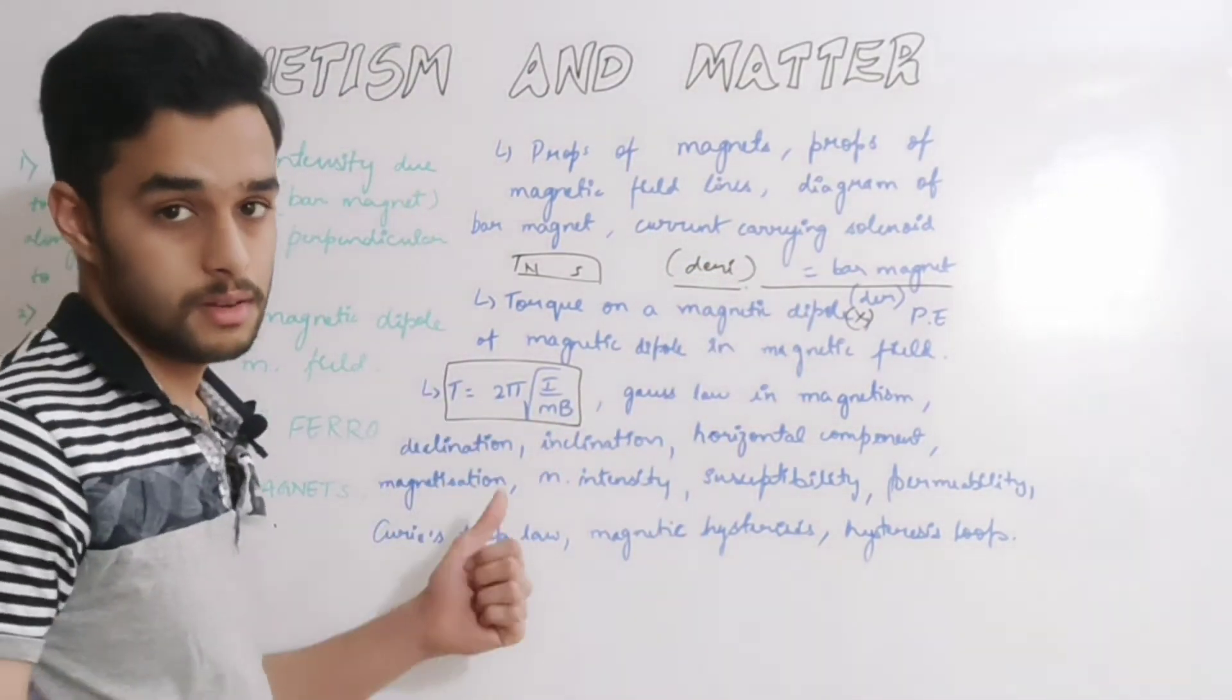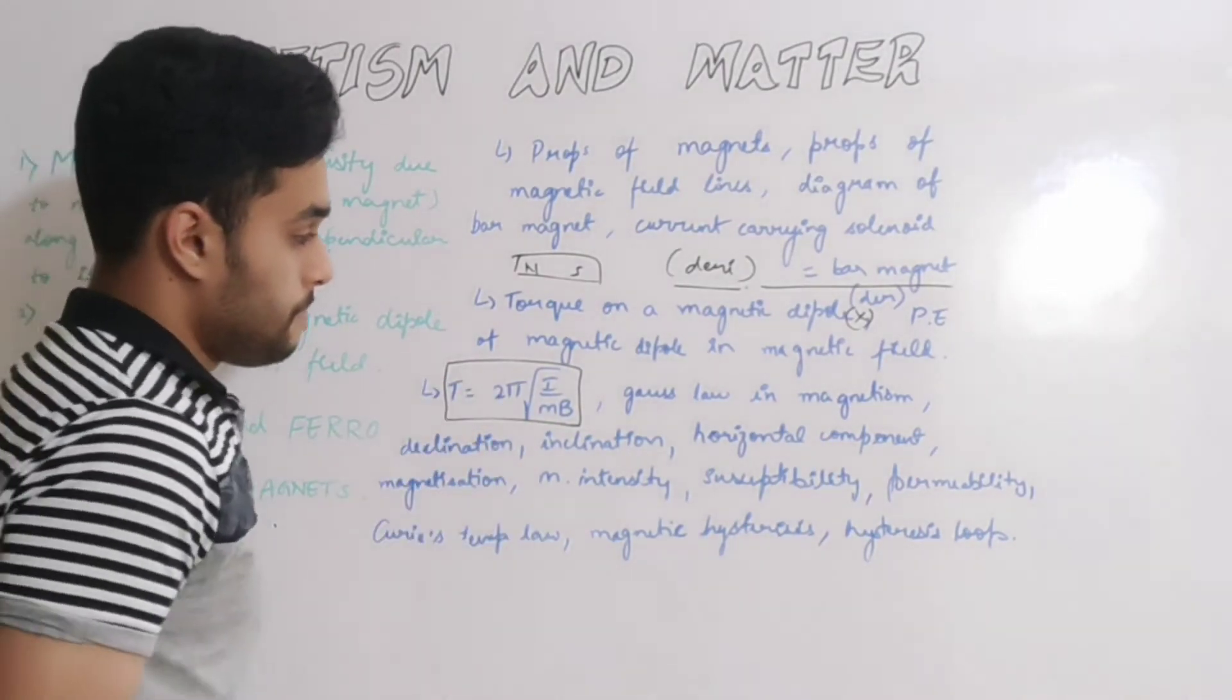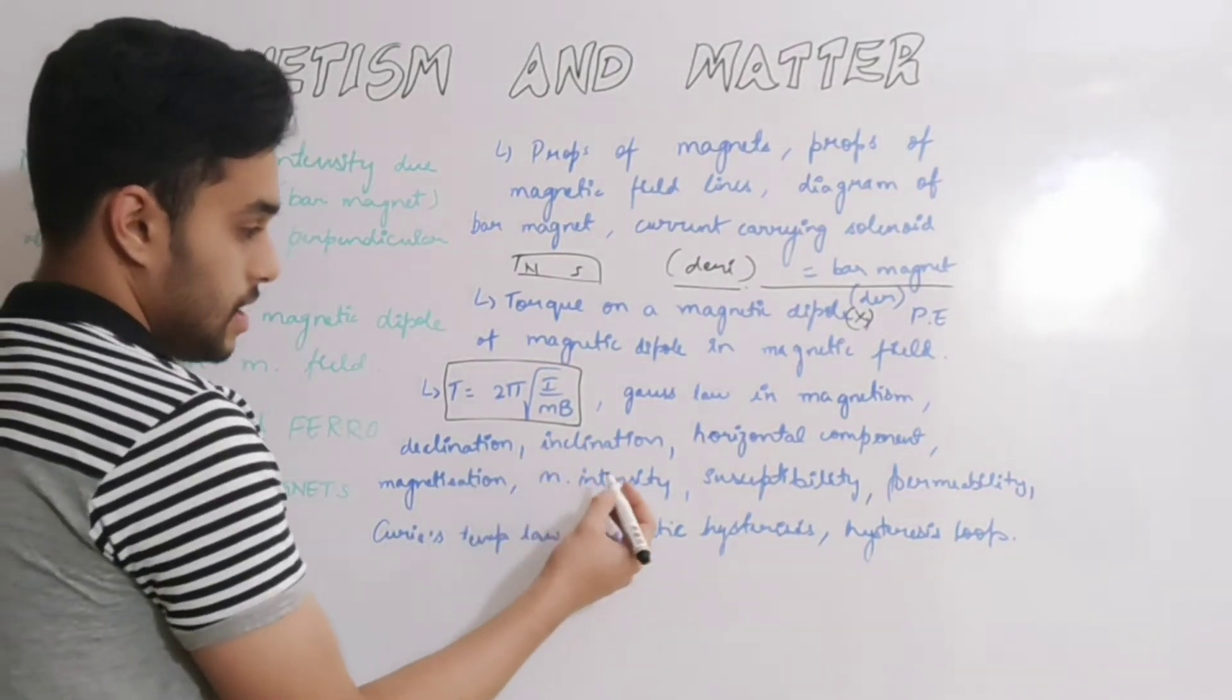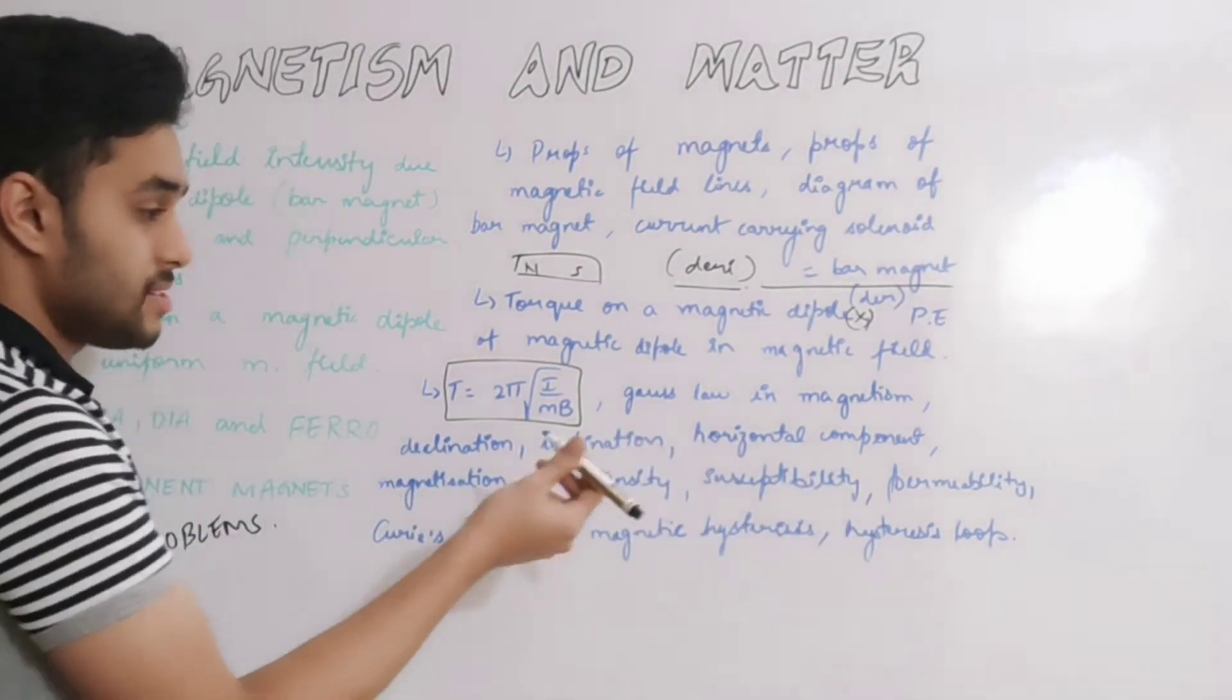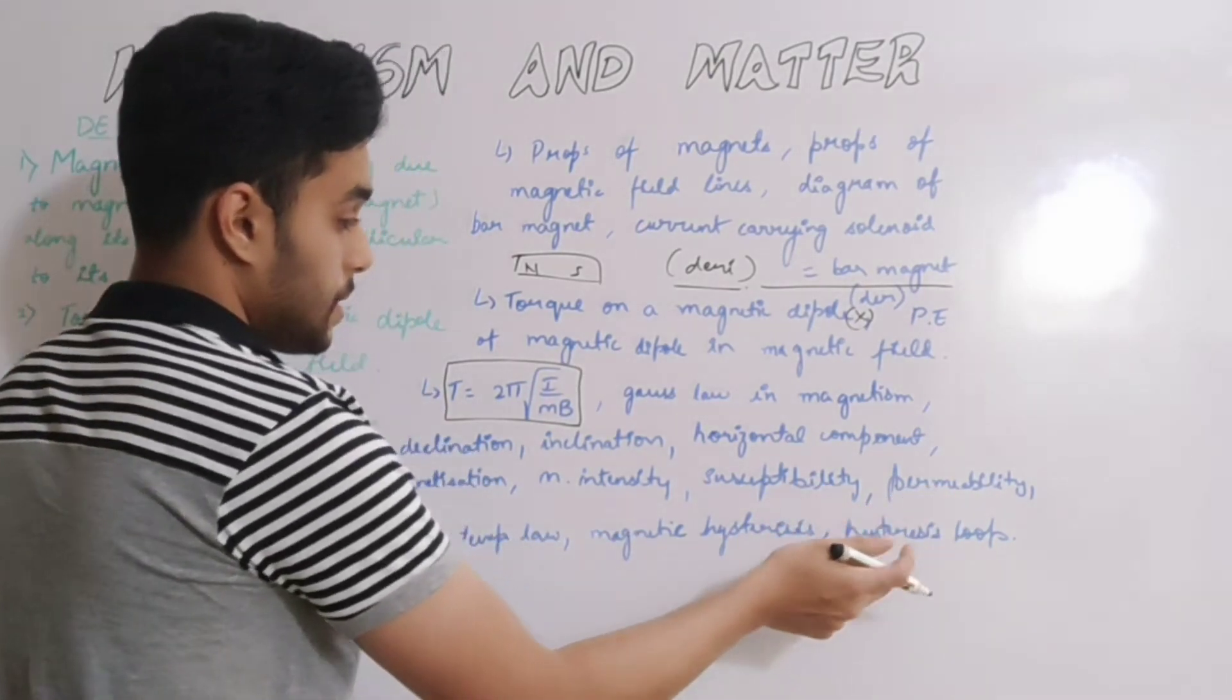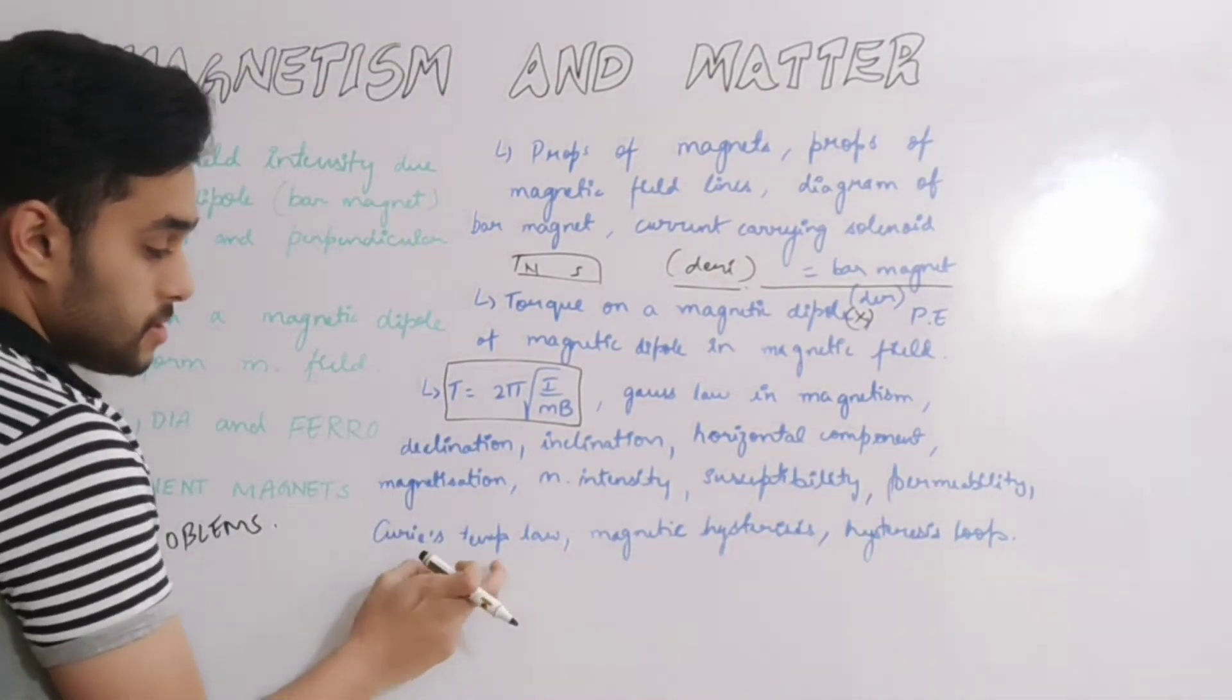Next thing: Gauss law in magnetism, declination, inclination, horizontal component - these are definitions plus magnetization, magnetic intensity, magnetic susceptibility, magnetic permeability, and Curie's temperature law. These are important for three marks and two marks.